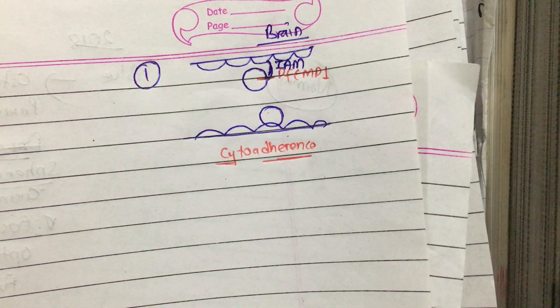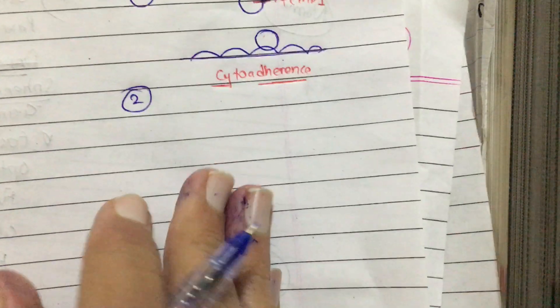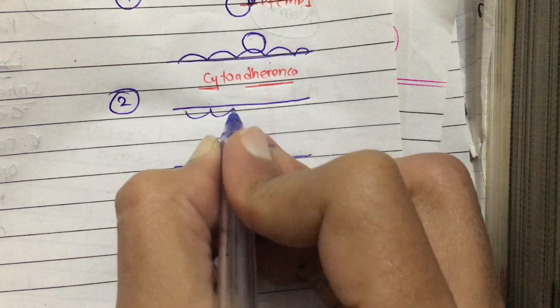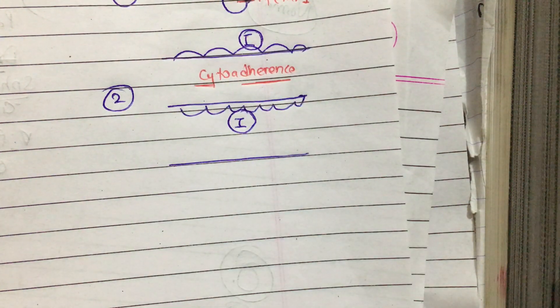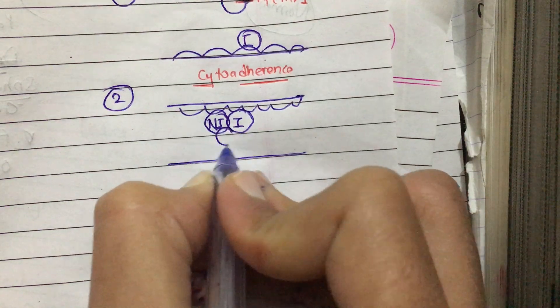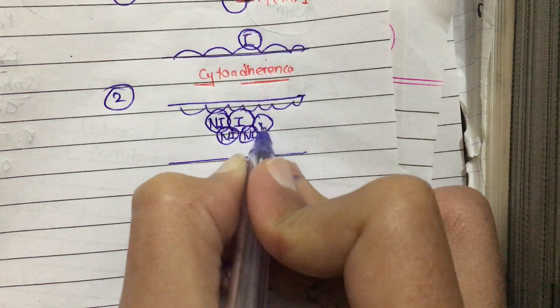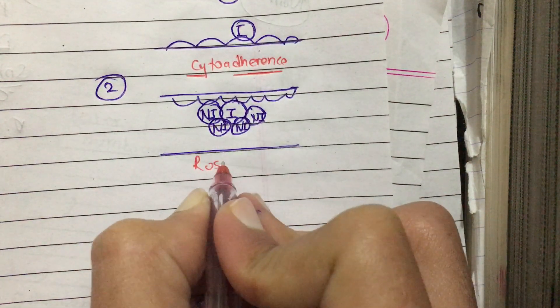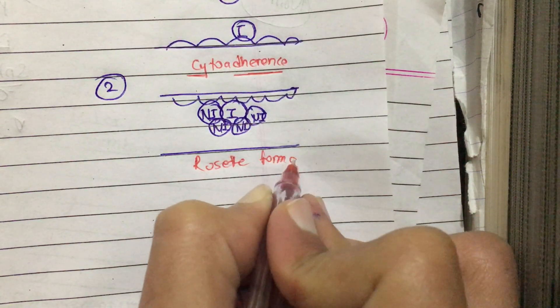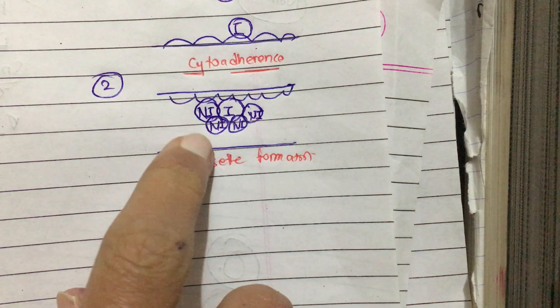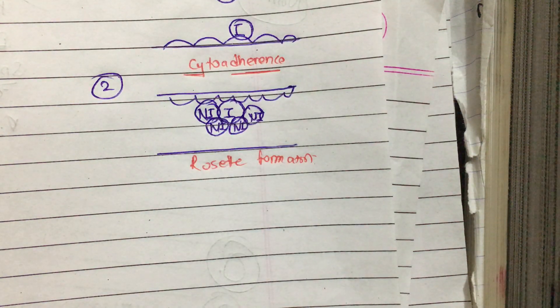The second process is rosette formation. The infected RBC, which is adhered to the endothelial cell, also attaches to non-infected RBCs, forming a rose-like pattern — this is known as rosette formation. So cytoadherence means the attachment of the infected cell to the endothelium, and rosette formation means the attachment of the infected RBC to non-infected RBCs.